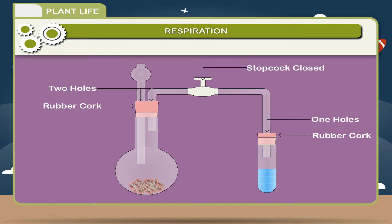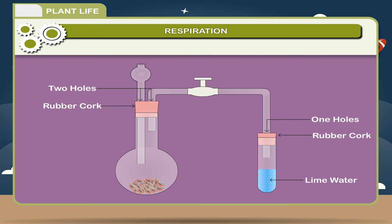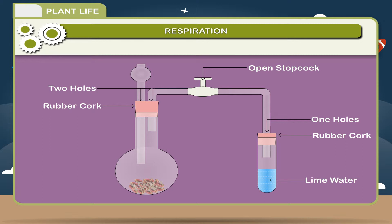Keep the stopcock closed. Put the free end of the glass tube in a test tube containing lime water. This tube is plugged with a cork having one hole. Now open the stopcock and leave the setup for about an hour or so.